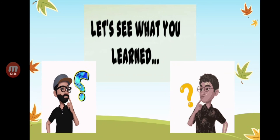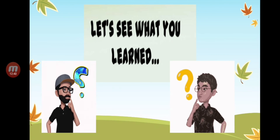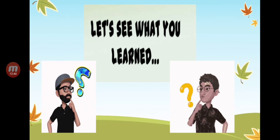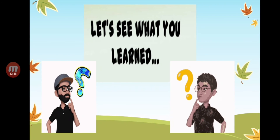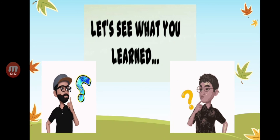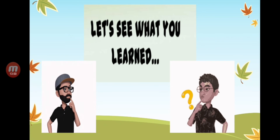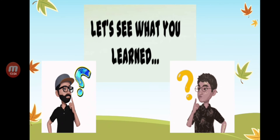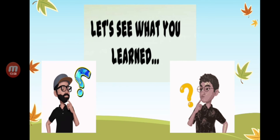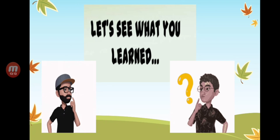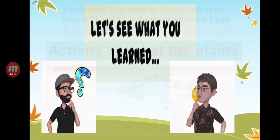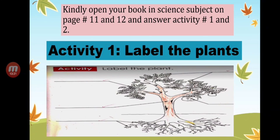Now let's see what you've learned. The parts of the plants are: roots, stem, leaves, flower, fruit, and seeds. That is the summary of the parts of the plants. Now it's activity time! Please open your Science book to pages 11 and 12. We will answer Activity Number 1 and Activity Number 2.